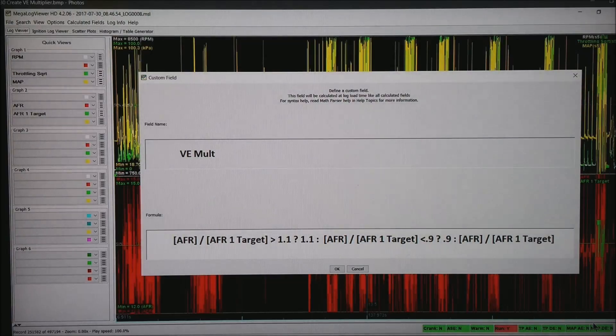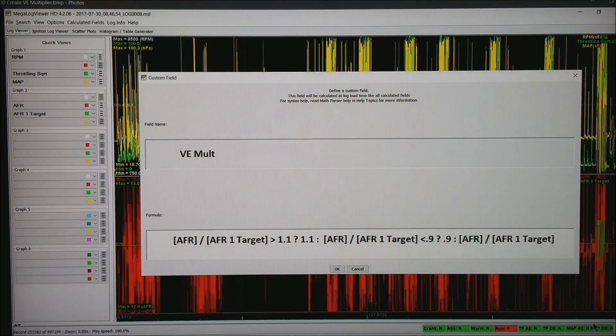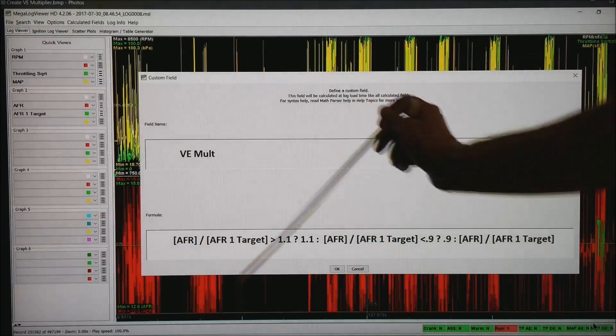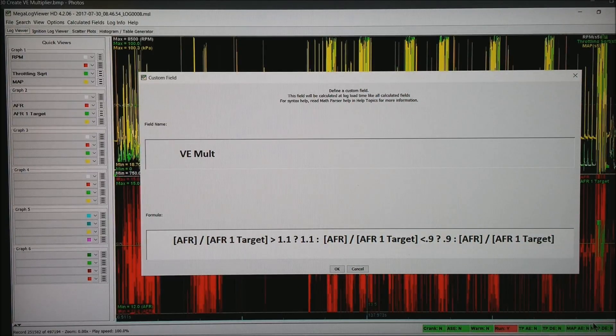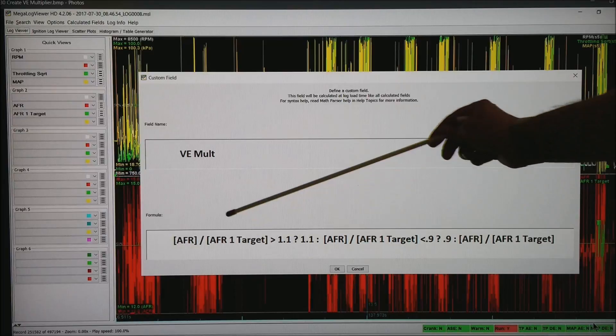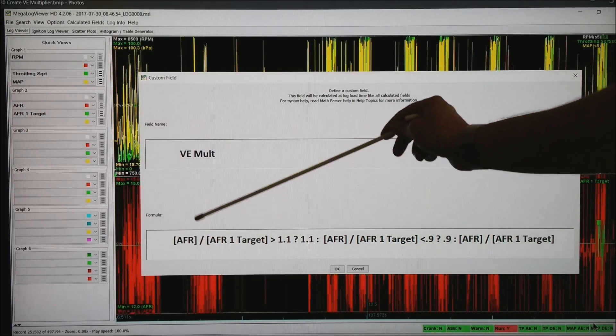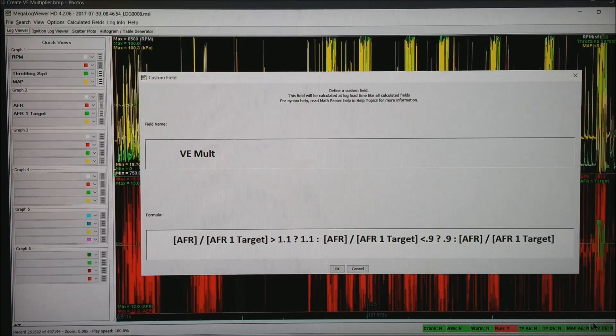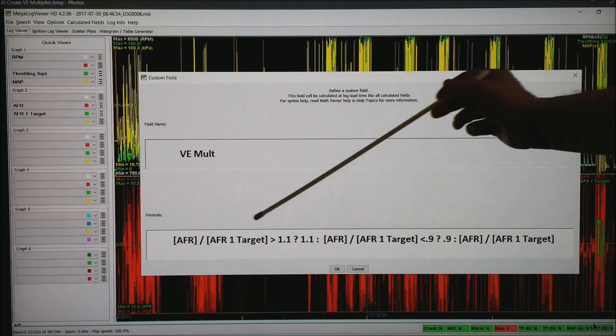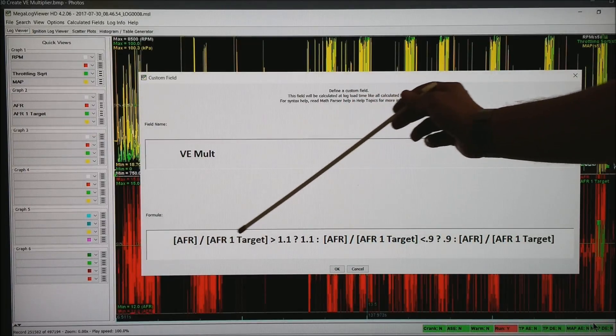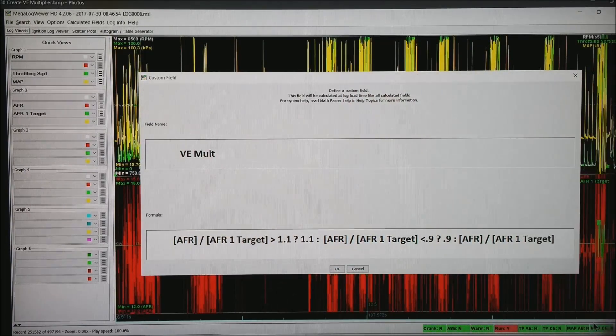The other formula I want to create is VEMult or VEMultiplier. And I will leave a link down in the bottom to make this a little easier to copy paste. But what I want is square brackets, whatever the AFR, or possibly lambda, is coming at you. In the square brackets, divided by whatever your target AFR or lambda is.